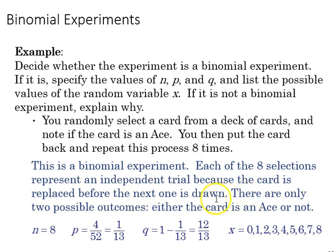In this experiment, we are looking at getting aces out of a deck of cards. We do eight trials, so N is 8. Probability, 4 out of 52. There are four aces in a deck of 52 cards, which can be simplified to 1 out of 13.